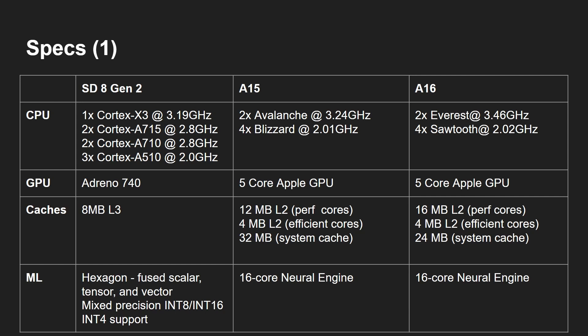Apple invests heavily in large caches, and their CPUs are designed to take advantage of them — including prefetchers and memory bandwidth. The Snapdragon 8 Gen 2 has 8 MB of L3 cache. The A15 has 12 MB of L2 cache for performance cores, 4 MB for efficiency cores, and 32 MB of system cache. The A16 reduces system cache to 24 MB but increases performance core L2 cache to 16 MB, with efficiency cores remaining at 4 MB.